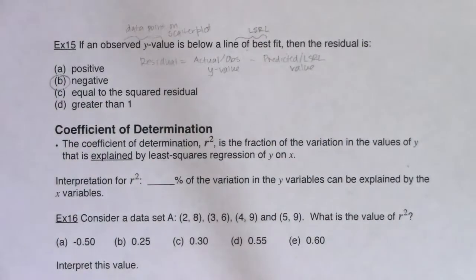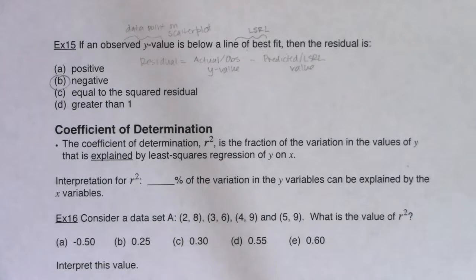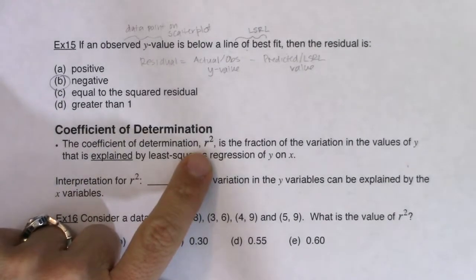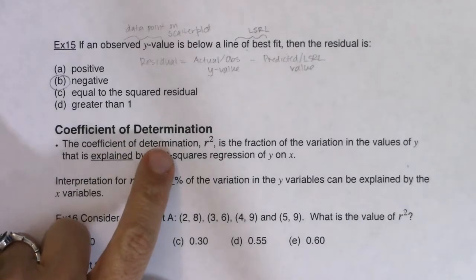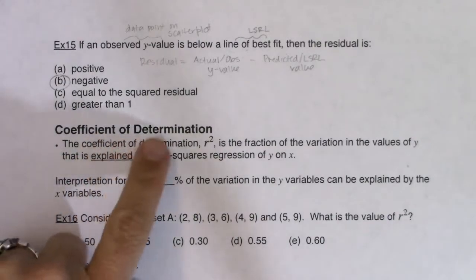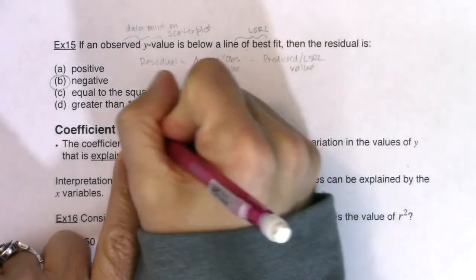Now let's pick up the coefficient of determination. The coefficient of determination is r squared. Once we leave linear regression, we leave r behind. Most regressions in the real world are not linear — most things are more convoluted than that. But we always start with linear regression when introduced to regression in general.